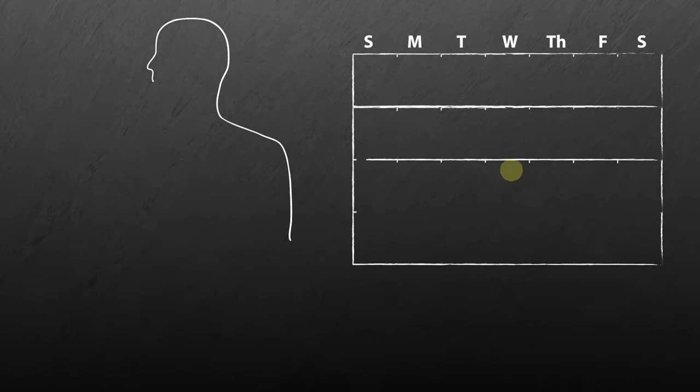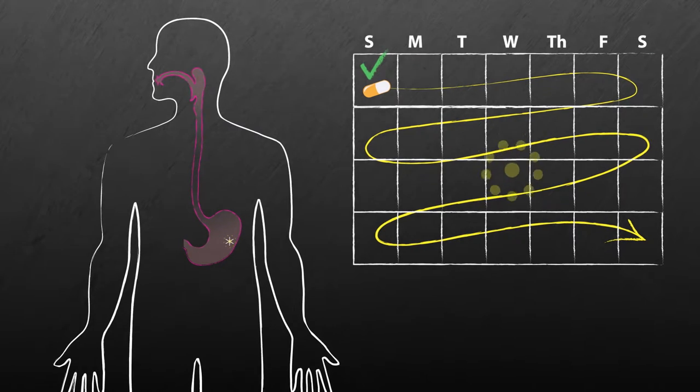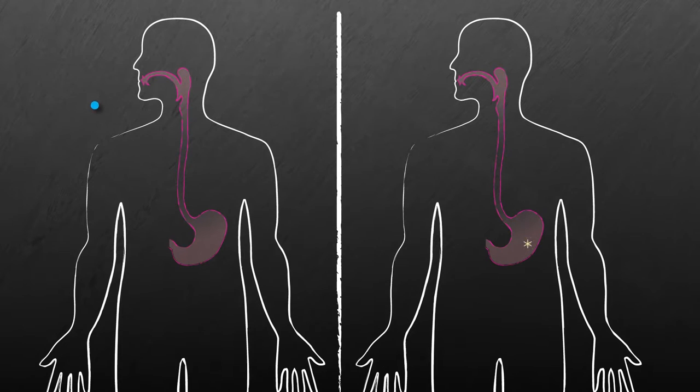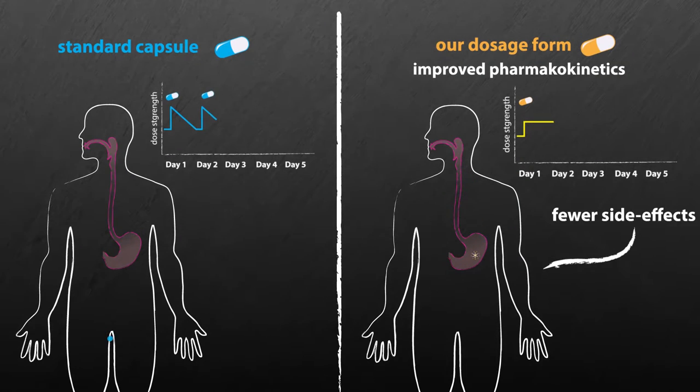Our dosage form could potentially allow people to take a pill once, which will stay in the stomach and continuously deliver the dose they need. This technology could significantly improve the side-effect profiles of drugs dosed over long periods through improved pharmacokinetics, avoiding complications such as those caused by peaks and lows associated with standard capsules.